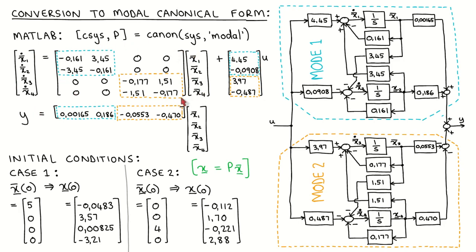Looking at the A matrix, we see it is in block diagonal form as expected, containing two 2×2 blocks, meaning there are two modes. The first mode is a complex pole pair with real component −0.161 and imaginary component ±3.45 — a stable but lightly damped pole pair with a natural response of exponentially decaying sinusoid at 3.45 rad/s, or a period of 1.8 seconds. The second mode is also a complex pole pair with real component −0.177 and imaginary component ±1.51, giving a lower frequency of 1.51 rad/s, or a period of just over four seconds.